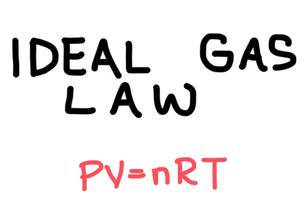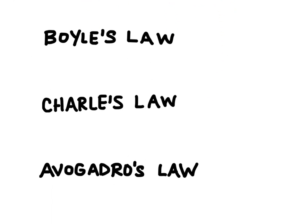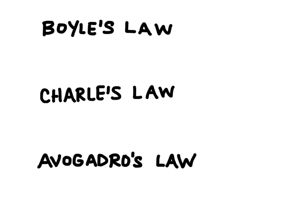As a review the relationships look like this. We have Boyle's law, and Boyle's law relates pressure and volume. It says as the pressure of a gas increases, the volume of a gas decreases, and we get a relationship of pressure times volume is going to be a constant.